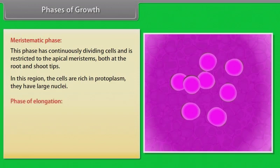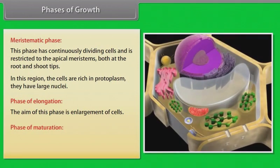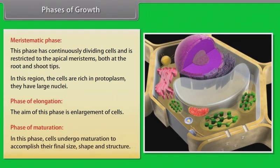Phase of elongation. The aim of this phase is enlargement of cells. Phase of maturation. In this phase, cells undergo maturation to accomplish their final size, shape and structure.